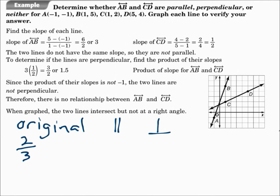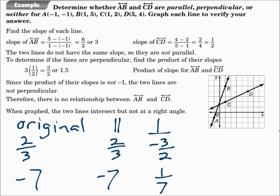If you had a slope of two-thirds for your line, the slope of the parallel line would be the same — two-thirds. The slope of the perpendicular line would be the negative reciprocal: negative three-halves. Perpendicular slopes are the negative reciprocal — you flip the fraction and change the sign. Two-thirds times negative three-halves is negative 1, which is what you need for perpendicular slopes. If one line has a slope of negative 7, the parallel line also has a slope of negative 7, and the perpendicular line would have a slope of positive one-seventh. Parallel lines have the same slope; perpendicular lines have slopes that are negative reciprocals of each other.